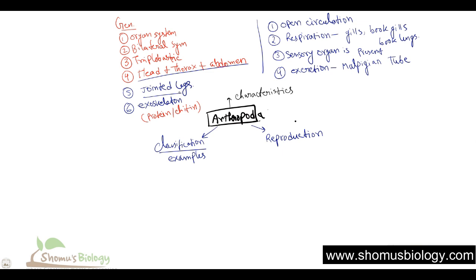So, jointed legs and exoskeleton are very common features present in all types of arthropods. Now, let's talk about their different classification — I am going to break them down into four different groups.